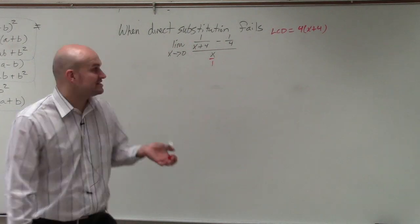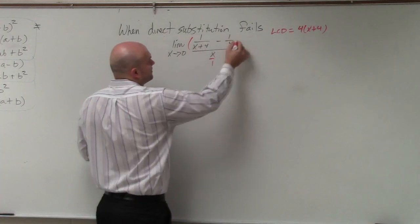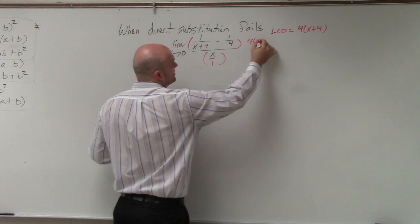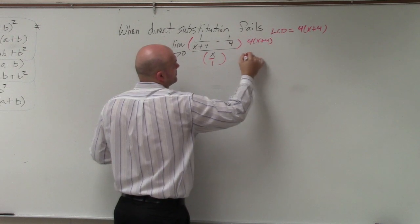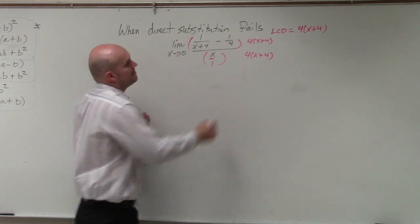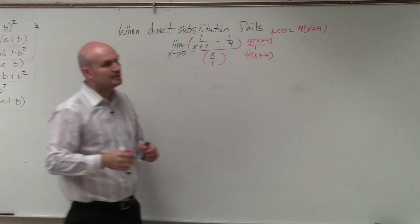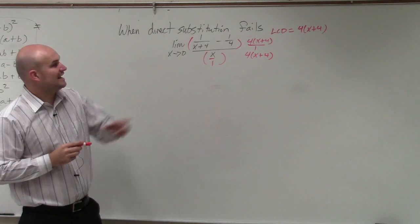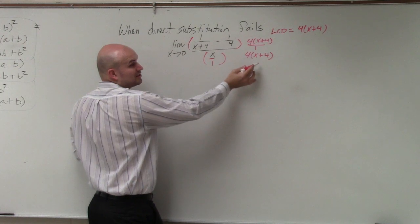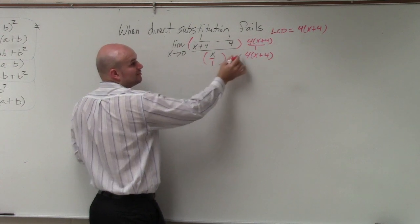And what's nice about the LCD is if you multiply the numerator and the denominator by the LCD—remember, think of it like that over 1—then we can eliminate our denominators. So remember, you have to multiply it in the numerator and the denominator, though, to keep equivalent fractions.